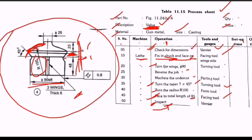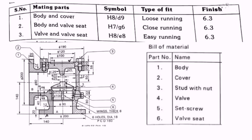The process sheet indicates the step-by-step procedure to produce a product. It is very helpful for design engineers and civil engineers as it gives every detail of information required to produce the designed object.